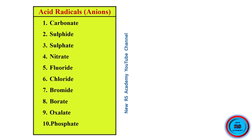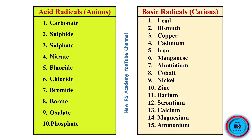What are the acid radicals? That means, what are the anions? Carbonate, sulfide, sulfate, nitrate, fluoride, chloride, bromide, borate, oxalate, phosphate. These are called acid radicals.